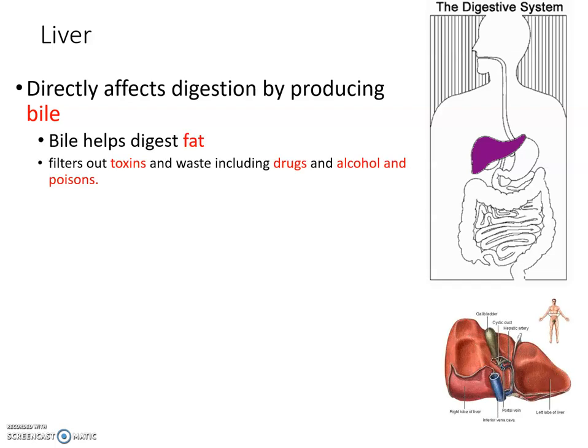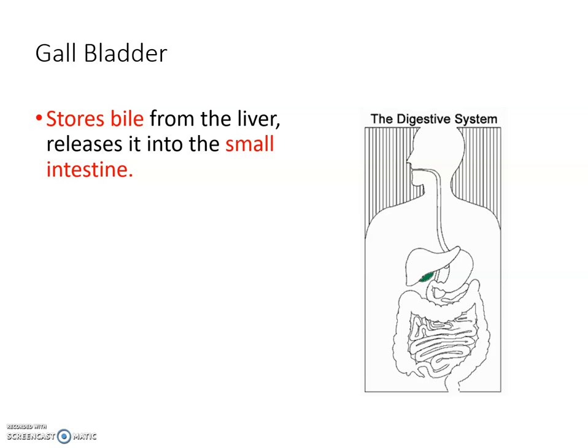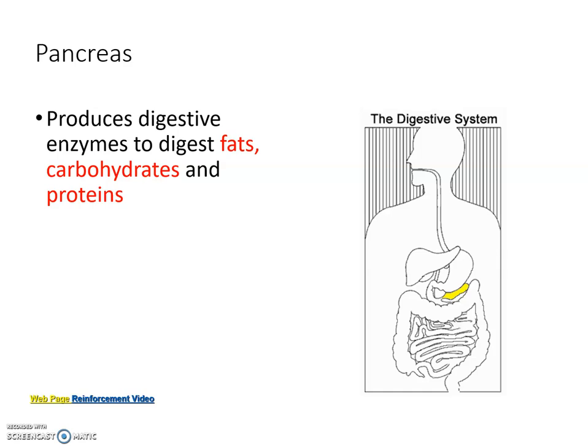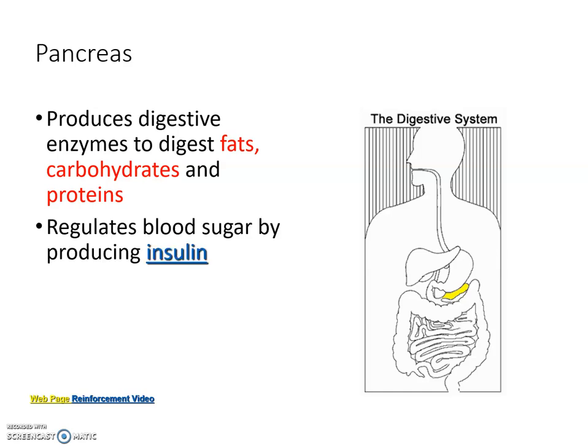Specifically, the liver produces a secretion called bile — a yellowish substance that helps break down fat, which is a complex molecule requiring a lot of energy to digest. Bile breaks down the fatty acid chains in fats, and also filters out waste, toxins, and alcohol. The gallbladder stores bile and releases it into the small intestine to help break down fats. The pancreas is key for blood sugar concentration — insulin is the main hormone involved — and it also produces enzymes that help digest food.